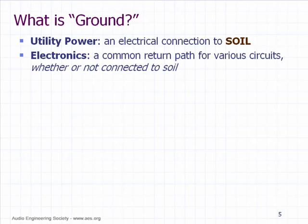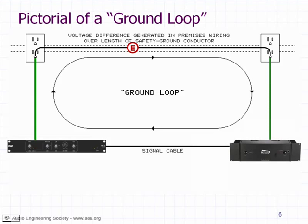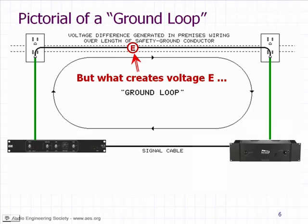This is where I'm going to introduce a concept that I don't believe anyone else has ever talked about. I did a limited amount of research on the internet and could find no one that actually explained where this voltage E — this voltage difference that exists between two outlets — where does it come from? I've heard some very weird ideas, so I decided to investigate.